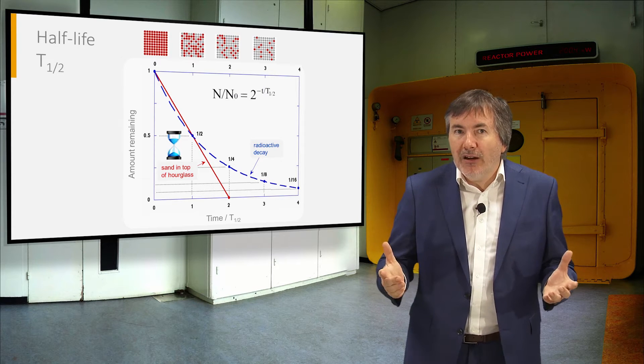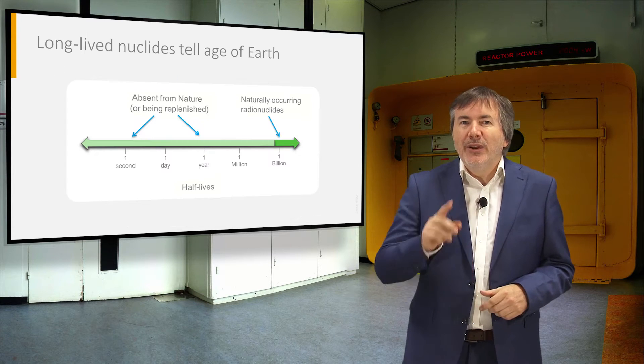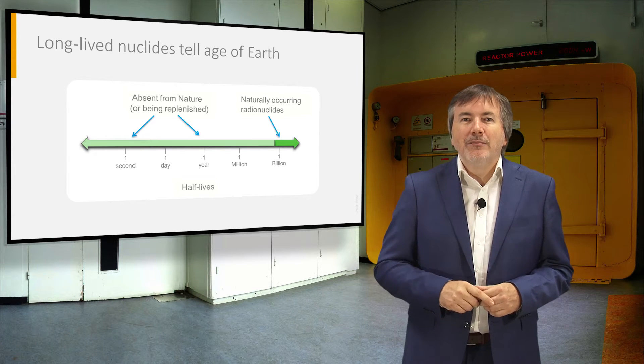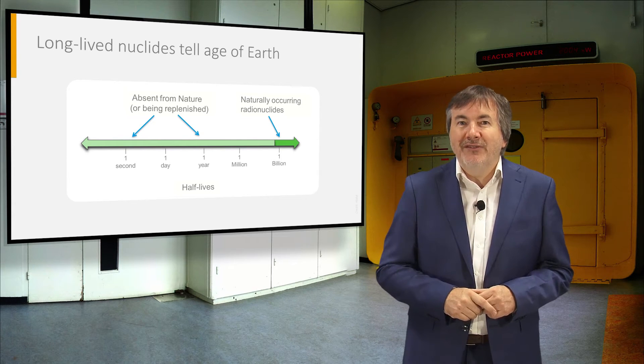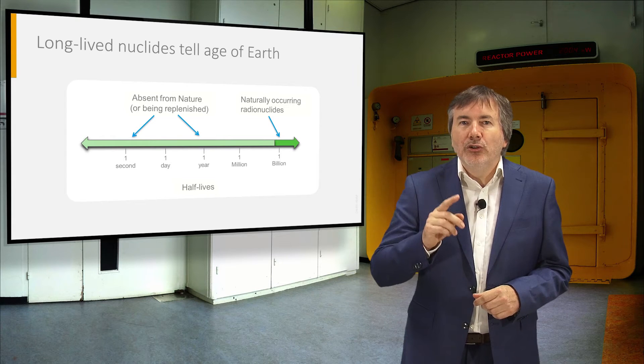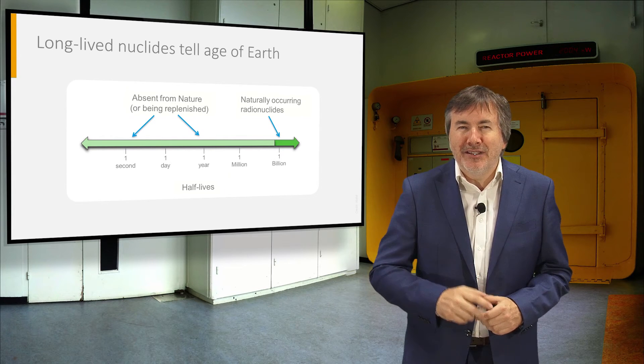Radioactivity is used as a clock in geochronology. We know that Earth is 4.5 billion years old, because all short-lived nuclides have decayed away, and only nuclides with long half-lives have survived with time.